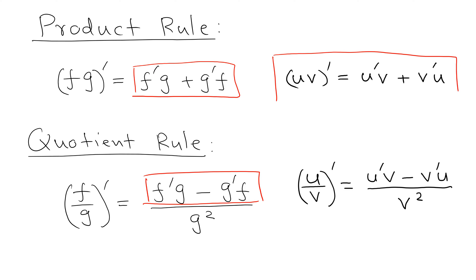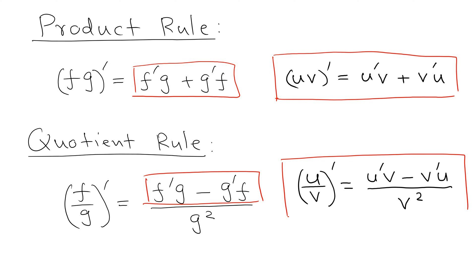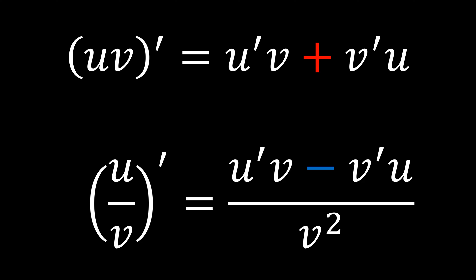You can see that in this form it is very easy to remember both formulas. To summarize: the product rule uses a plus sign, and the quotient rule uses a minus sign. This is the easiest way to remember the product and quotient rules.